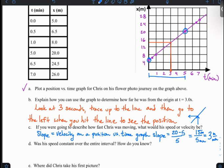Was his speed constant over the entire interval? How do you know? So yes, his speed was constant. And I know that because the slope doesn't change. In other words, it's a straight line. And when it's a straight line, the slope stays the same, which means your velocity stays the same.